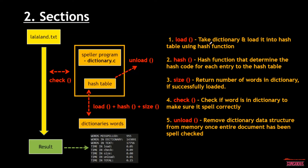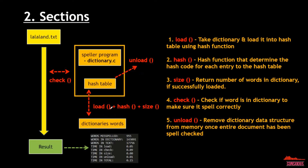Load basically just takes the dictionary words and loads them into our hash tables. The hash function determines the hash codes for each entry in the hash table. Size returns the number of words in dictionary if successfully loaded. Check compares words in the lalaland text against the hash table — the dictionary words — to check whether both of them are equal, else false. At last, we have to remove the dictionary from the data structures once the entire document has been spell-checked.